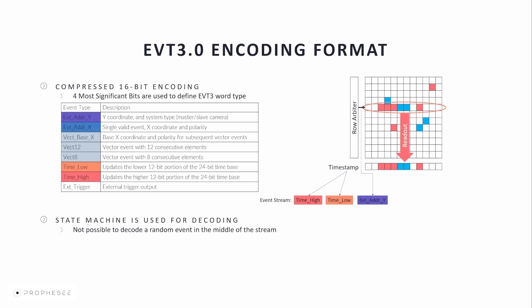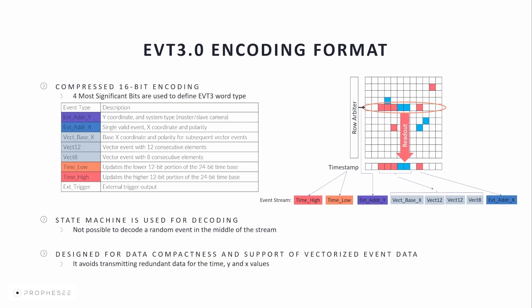Regarding the other word types, the event address Y identifies the Y-coordinate of the vector of CD events. It's followed by the vector base X, transmitting the base X-coordinate and the polarity of the following vector events of the block of 32 bits encoded as two Vect12 and one Vect8 event. Vect12 and Vect8 events encode correspondingly 12 and 8 validity bits identifying the events of the same type, timestamp, and Y-coordinate. A single event in a row or a block of 32 bits is encoded with the event address X identifying the event polarity and X-coordinate. EVT3 format is designed for data compactness and to support vectorized event data, avoiding transmitting redundant data for the time, X, and Y pixel addresses. This format is mainly used for the Gen4 and the IMX636 sensors.